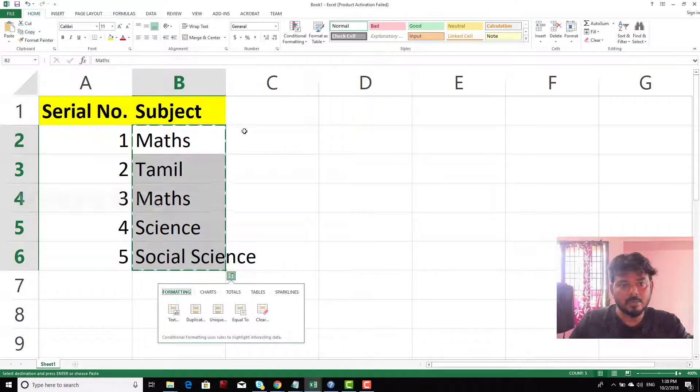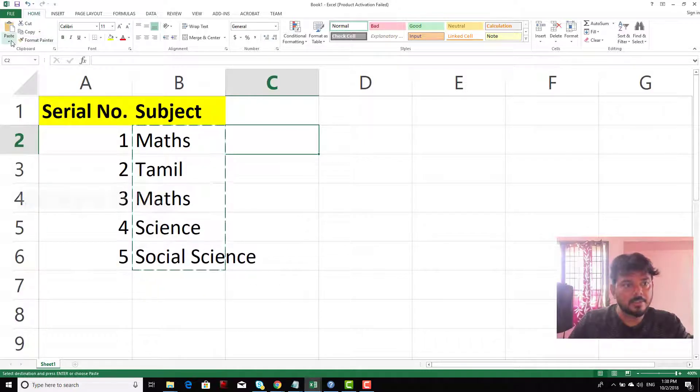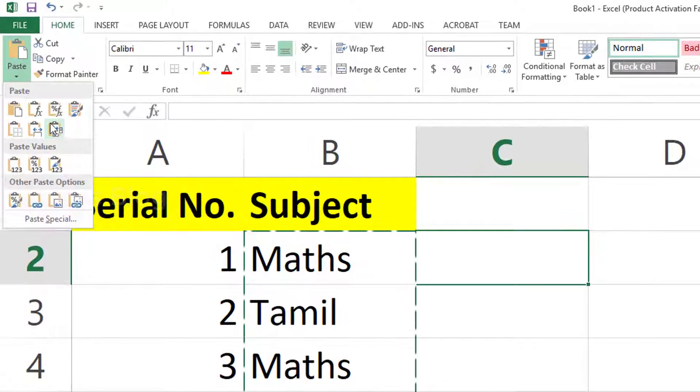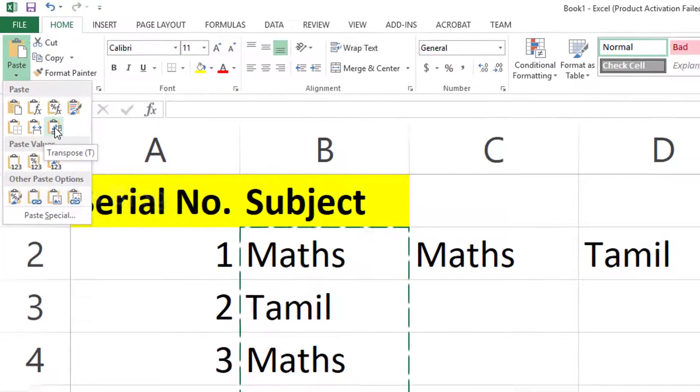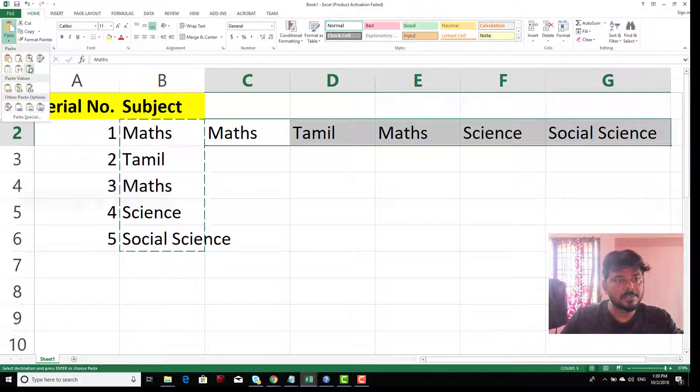Control C, and where I want to paste it. For example, if I want to paste this here, you will have this paste options here and you need to see this transpose. This transpose option you can choose that.